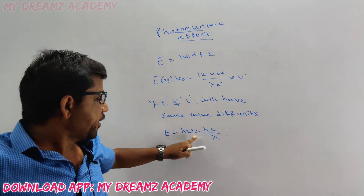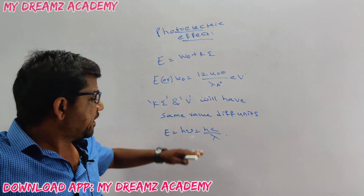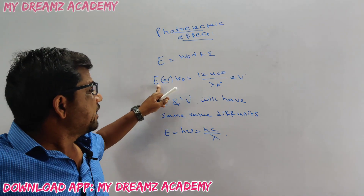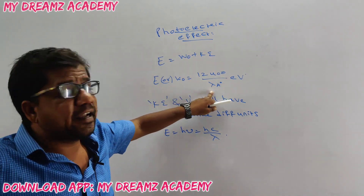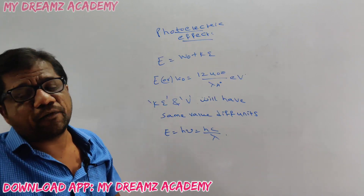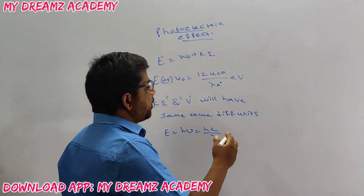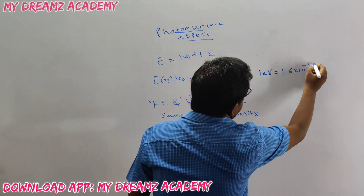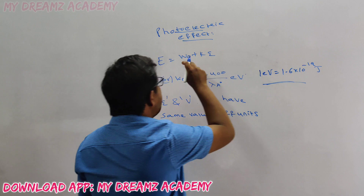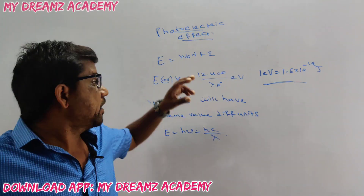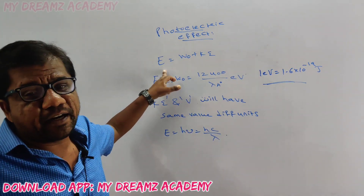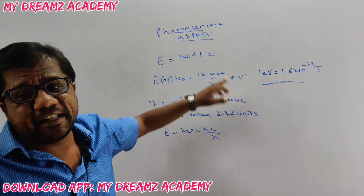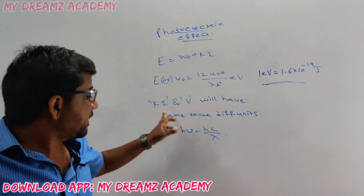According to Planck's theory, energy E equals h-nu, and h-nu equals h-c by lambda, where nu is the frequency and lambda is the wavelength. But to save time solving problems, you can directly write 12400 divided by wavelength in angstroms to get the value in electron volts. If options are given in joules, one electron volt equals 1.6 × 10⁻¹⁹ joules. For example, if the metal has a work function of 4 eV and the incident energy is 10 eV, the remaining 6 eV appears as kinetic energy.